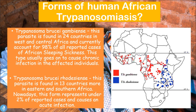Trypanosoma brucei rhodiensi is found in 13 countries in Eastern and Southern Africa. This form represents under 2% of all reported cases and usually causes an acute infection. So the more severe form accounting for 98% of cases causes chronic infection, while rhodiensi, accounting for only 2%, causes a short and acute infection.